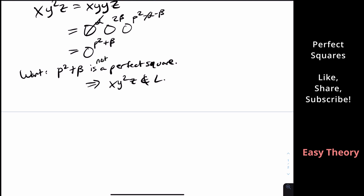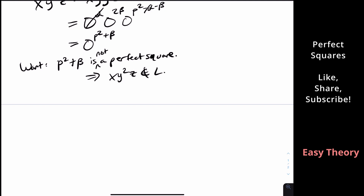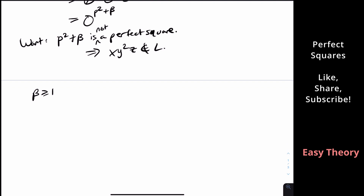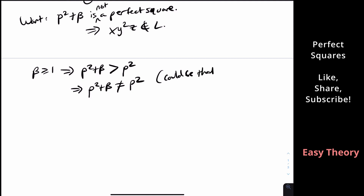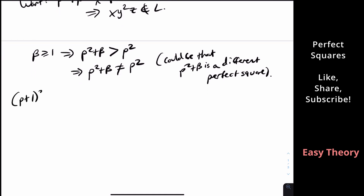It is indeed not a perfect square. Since β ≥ 1, P² + β is strictly greater than P². So P² + β ≠ P². But it could potentially be a different perfect square. The next perfect square after P² is (P+1)² = P² + 2P + 1.